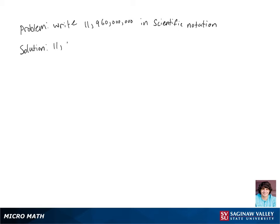Let's write 11,960,000,000 in scientific notation. We're going to move the decimal over until there's only one non-zero digit to the left of the decimal place. And then we're going to go ahead and count how many times we moved our decimal.